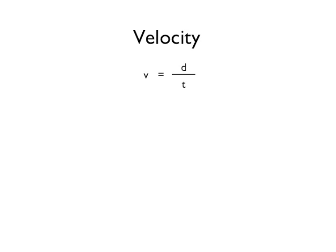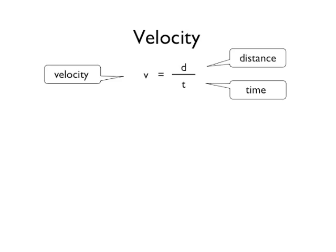Let's look at the equation for velocity, V, as an example of this type of equation. By definition, velocity is distance, D, divided by time, T.